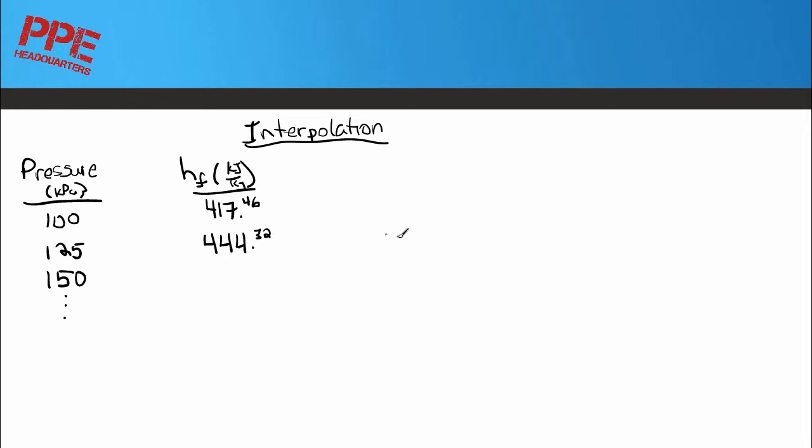So often you'll be asked, what is the enthalpy for, let's say, 121 kPa. Now basically we know we're in between here. We'll get an answer that's close to - well, we're most of the way to the 125 - we'll get an answer that's close to 444. I'll show you guys how to figure this out.